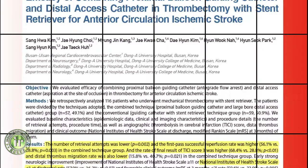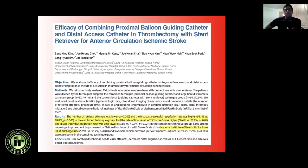The take-home message is that combining the proximal balloon guiding catheter with an aspiration stent retriever or aspiration alone in anterior circulation ischemic stroke reduces the retrieval attempts, improves your first pass success rate, and the combined technique definitely appears to get better clinical results in this group.